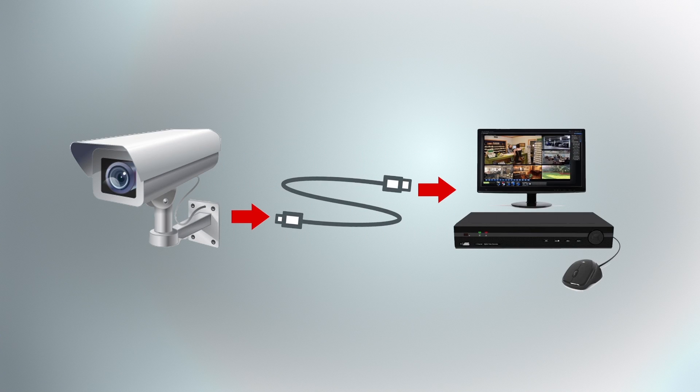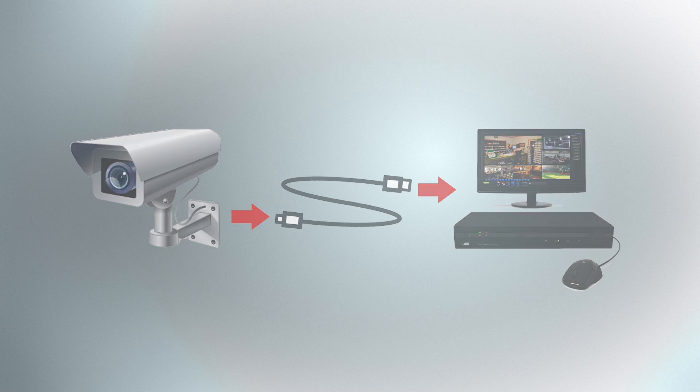A CCTV camera sends a video signal to a DVR using a video cable. The camera's signal is analog, not digital. The DVR converts the analog signal the camera generates to a digital format and then records the video to a hard drive. This technology is most cost effective and provides a simple, straightforward installation.